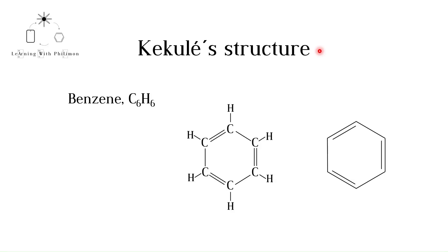Welcome to Learning with Philemon. In this video we will be discussing the structure of the molecule benzene. Benzene has the molecular formula C6H6. In 1865, the German chemist August Kekulé proposed that benzene contained a six-membered ring of carbons with alternating single and double bonds. Here we see both the structural formula and the skeletal formula. In skeletal formulas, each corner represents a carbon atom. Since carbon should form four bonds, the number of hydrogen atoms bonded to each carbon atom can be deduced.